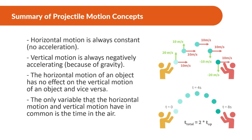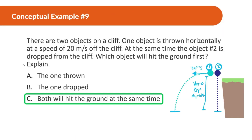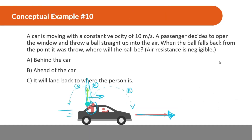A summary of projectile motion concepts: horizontal motion is always constant — no acceleration. If a ball is thrown, the velocity in X is always the same, never getting slower or faster. Vertical motion is always negatively accelerating because of gravity, slowing down on the way up and speeding back up on the way down. The horizontal motion of an object has no effect on its vertical motion — whatever's happening in X doesn't affect Y.